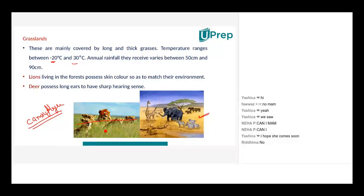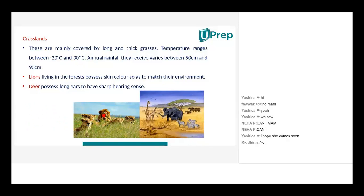For lions to hunt animals, for example even the deer, the deer possess long ears to have a sharp hearing sense. Deer are also wonderful at camouflaging because they also have a similar golden-yellowish color. Of course, if there's a lion in the grasslands, there would be deer there too.